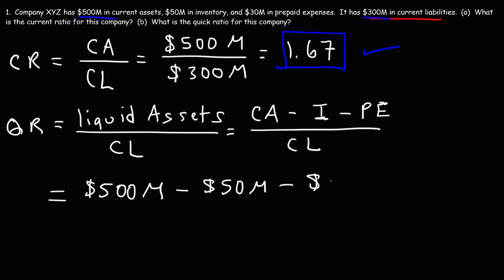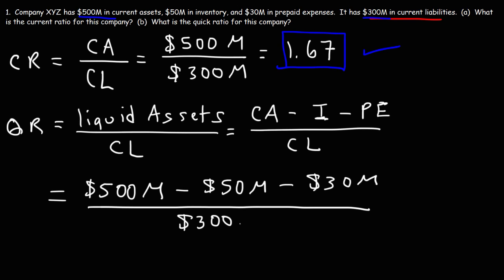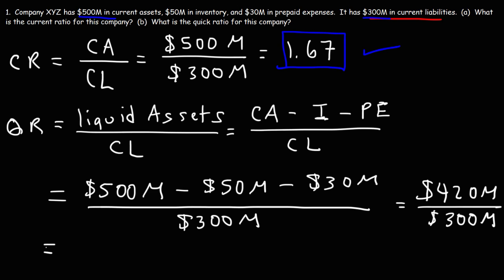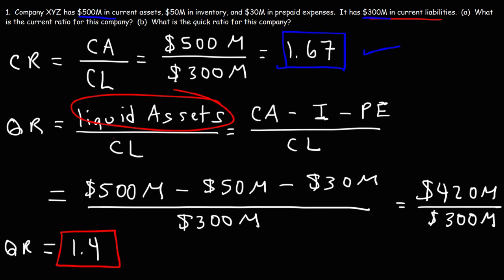The prepaid expenses are $30 million, divided by the current liabilities of $300 million. So this is $500 minus $50 minus $30, which is $420 million. We divide $420 million by $300 million to get a quick ratio of 1.4, which is above 1. That's good because you want the liquid assets to exceed the current liabilities, meaning the company can pay its short-term financial obligations within a year.